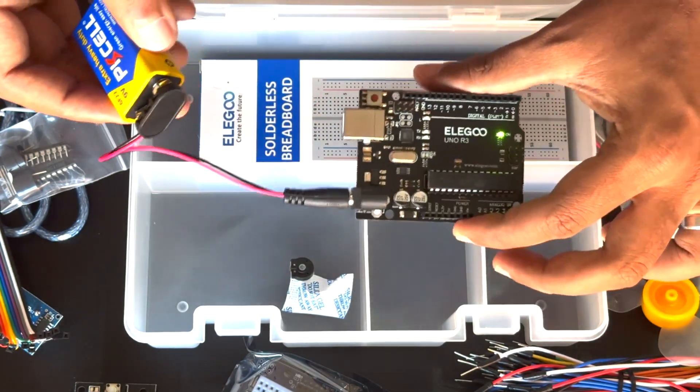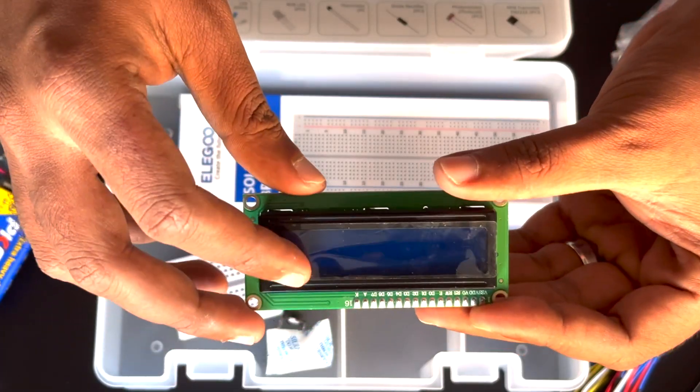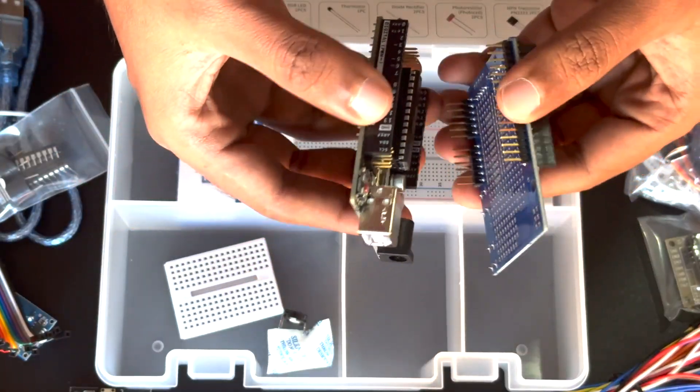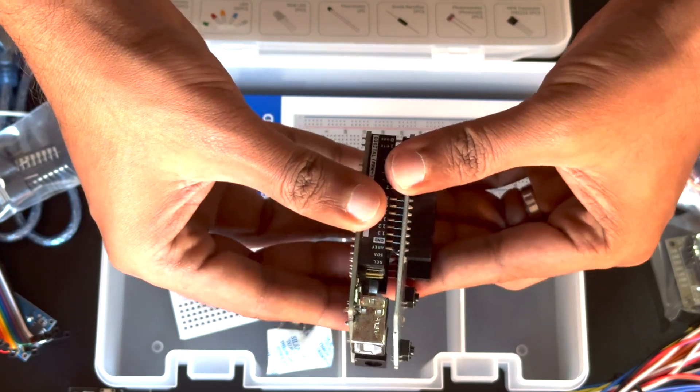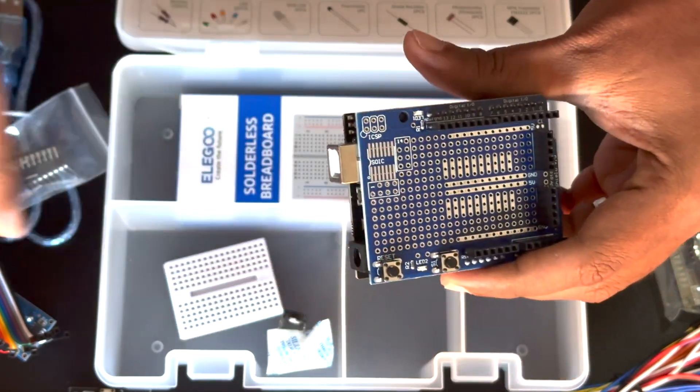It also includes this LCD 1602 module with a header pin. What's great about this kit and its components is that you don't need to be a soldering pro to get it working. It's already soldered to header pins and is ready to use right out of the box, saving you time and ensuring you have a hassle-free experience.